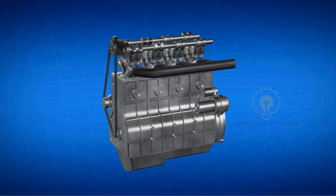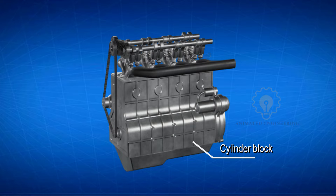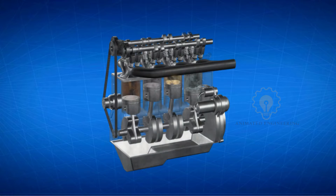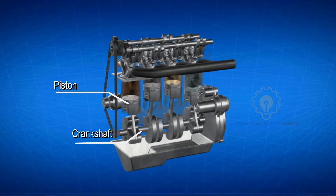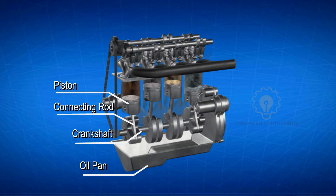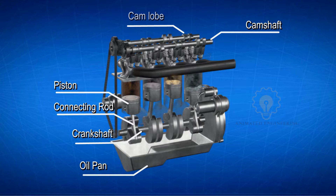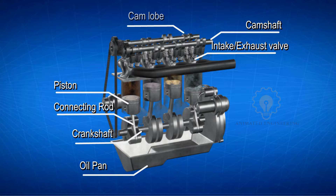The engine consists of two main parts. The heavy part at the bottom is the cylinder block, which is the housing for the main moving parts of the engine. The cylinder block supports pistons, crankshaft, connecting rod, and oil pan. The detachable upper cylinder head supports the camshaft, cam, and intake and exhaust valves, to open and close as the air-fuel mixture enters the combustion chamber.